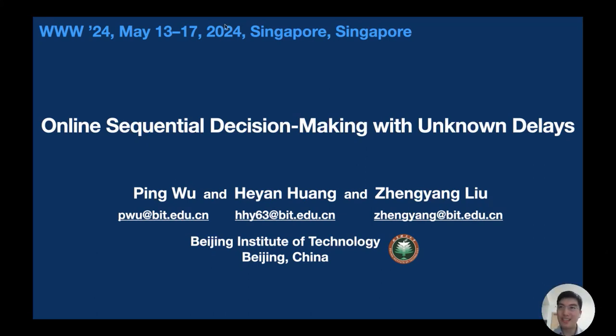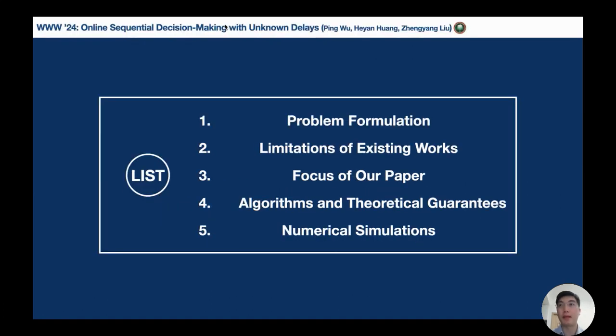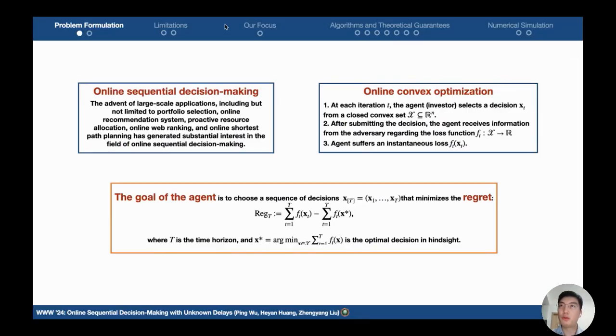Today, I am honored to present our research on online sequential decision making with unknown delays. In this presentation, I will discuss the following five key aspects. To begin with, we adopt the framework of online convex optimization to describe the process of online sequential decision making.